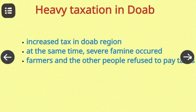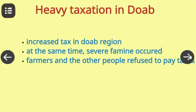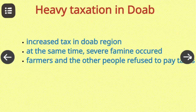The Doab was the area between the Ganga and the Yamuna rivers — a very fertile region. To increase the income of the state, Muhammad bin Tughlaq increased the land tax and started collecting some other taxes as well. Unfortunately, when this tax was imposed, it destroyed farming and the farmers ran away from their houses. People refused to pay taxes. Though Muhammad bin Tughlaq ordered some relief measures, the damage was already done.